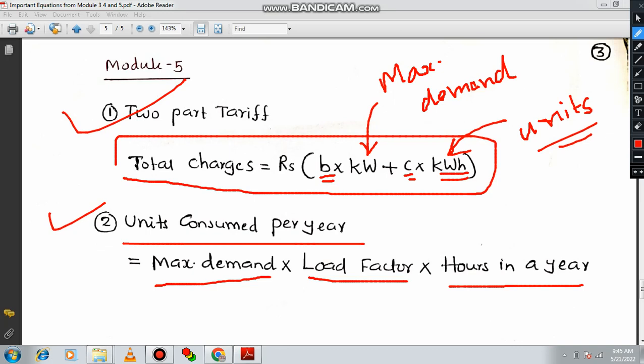And what is load factor? Load factor is nothing but the average load. It is a constant actually. It is a fraction. The average load divided by maximal demand. That is called load factor. Sometimes they may give you average load and maximal demand but the load factor may not be given. At that time you need to recall, what is load factor? Average load divided by maximal demand. Like that you can plan. These are the important equations which I found in module 5.